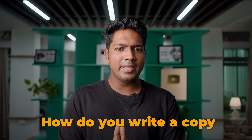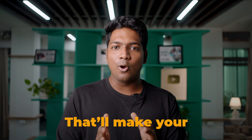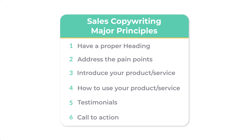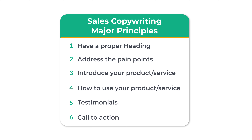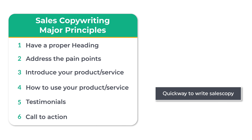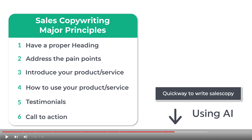Now how do you write a copy that will make your audience take an action? Writing an effective sales copy involves six major principles. Before we dive into them, if you're just looking for a quick way to write a sales copy, you can skip to the part where I'll show you how to write an effective sales copy using AI.